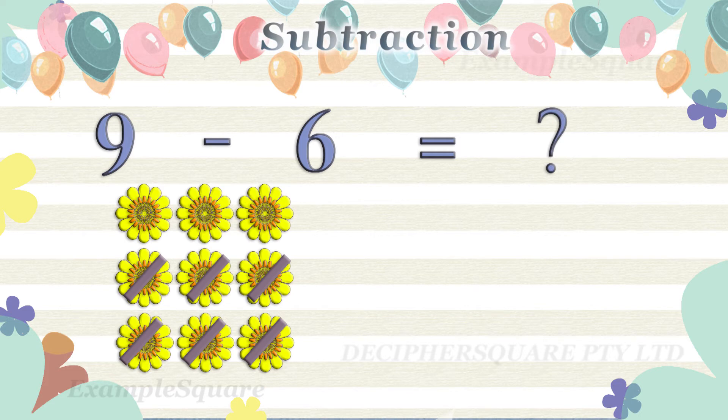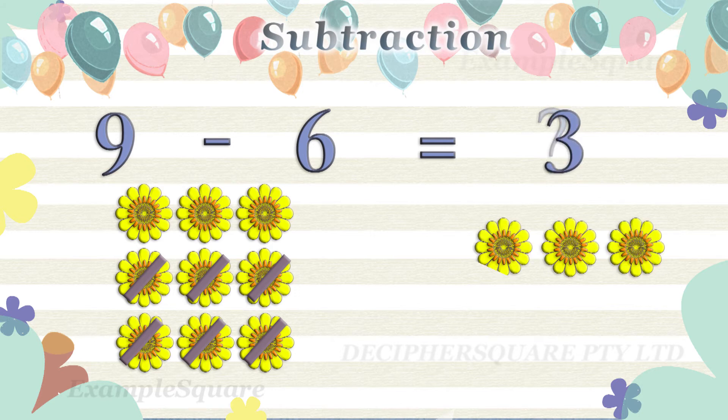If six flowers are taken away from nine flowers then three flowers are left. Nine minus six equals three.